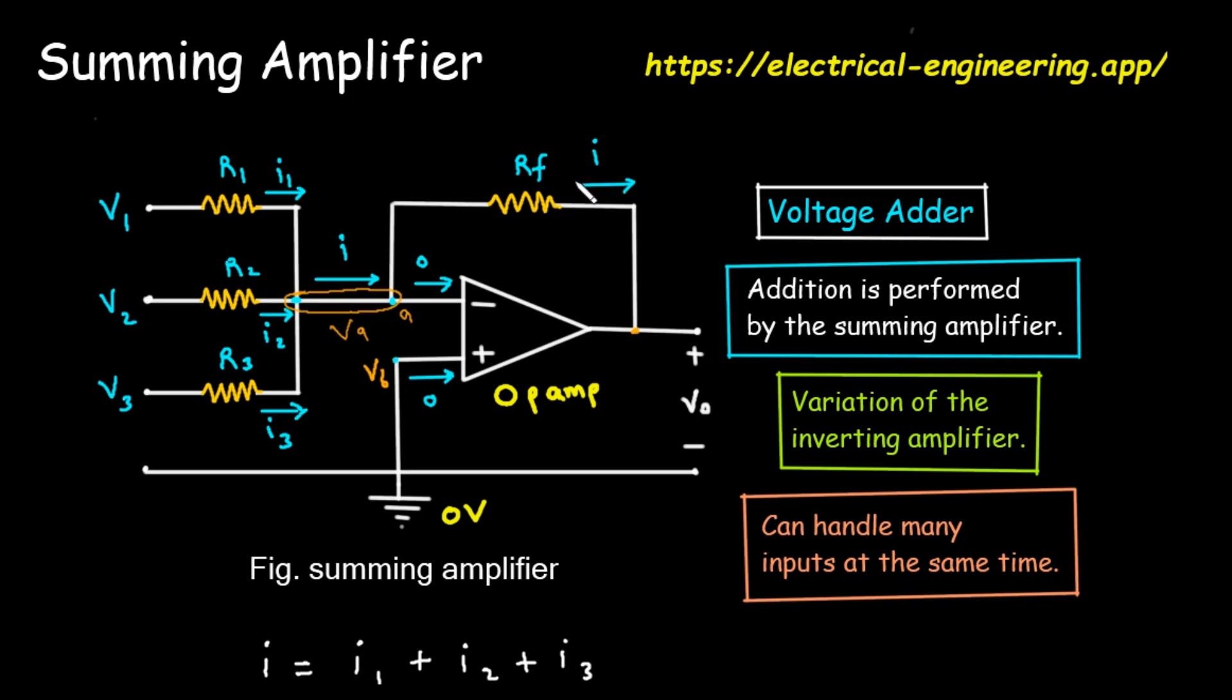To quickly recap the setup: we have three input signals, each with its own resistor, all feeding into the op-amp's minus input. The plus input is connected to ground. And a feedback resistor connects the output back to the minus input.